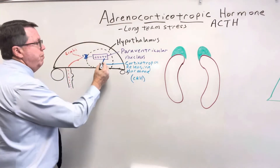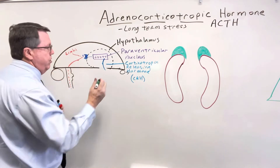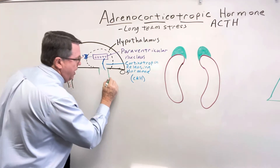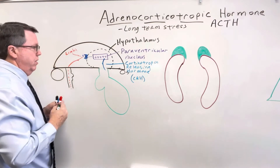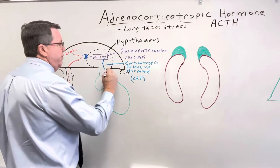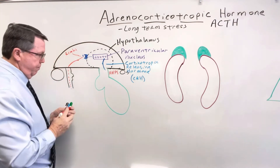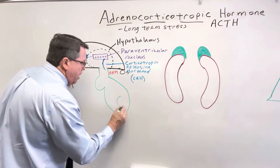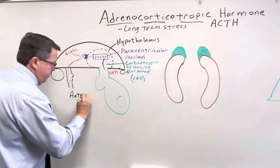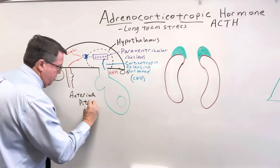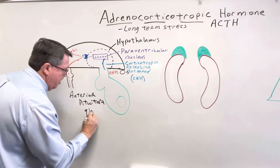This corticotropin-releasing hormone is going to come down to the pituitary gland. There's the infundibulum, and I'm going to draw the anterior pituitary really big and the posterior pituitary kind of small. This is going to travel through something called the hypothalamic hypophyseal portal system down into the anterior pituitary gland.